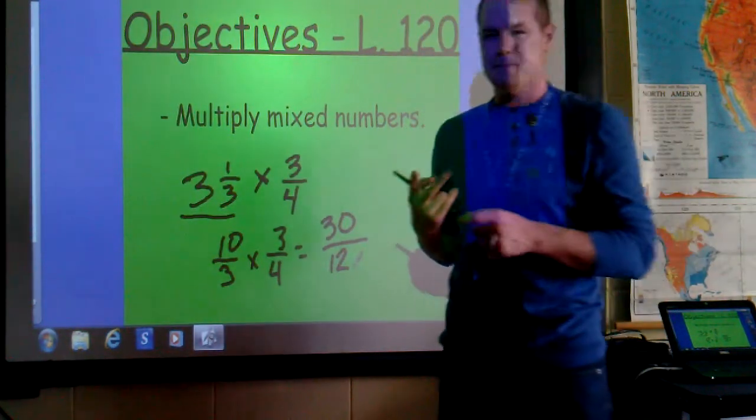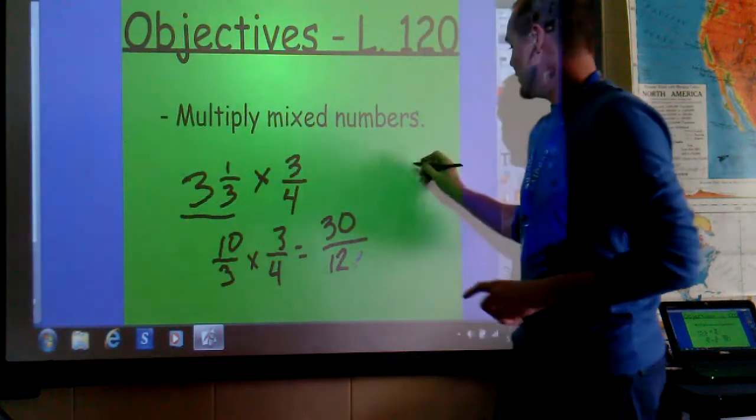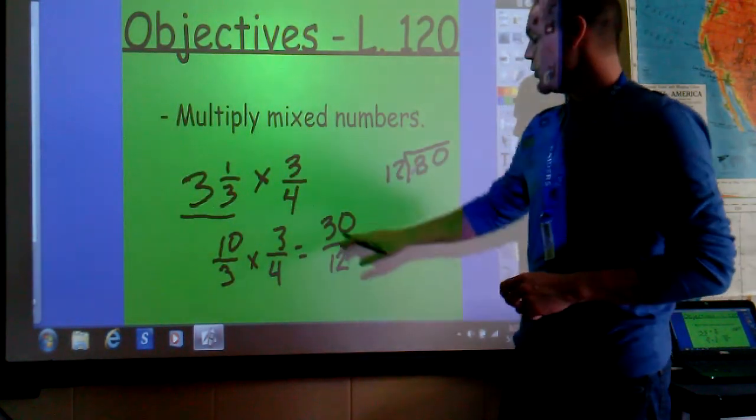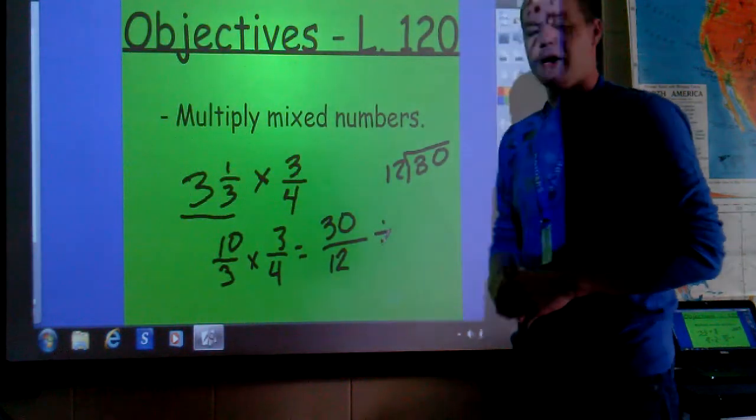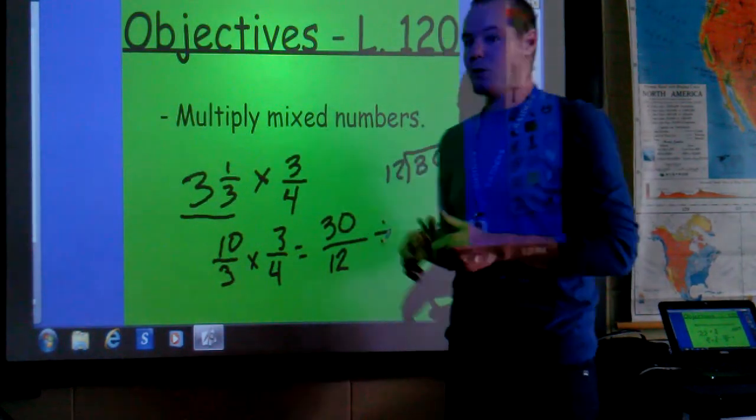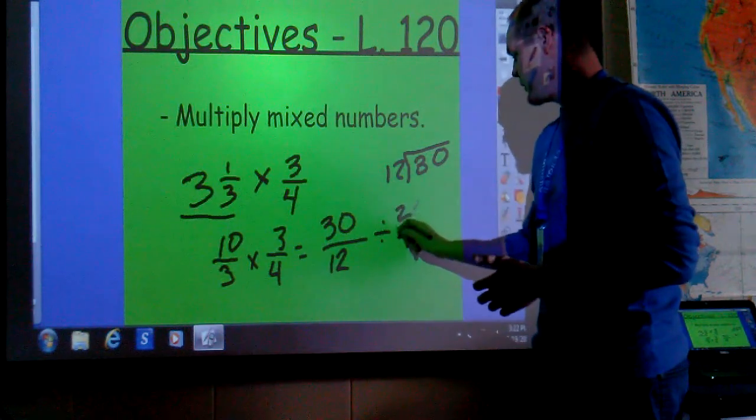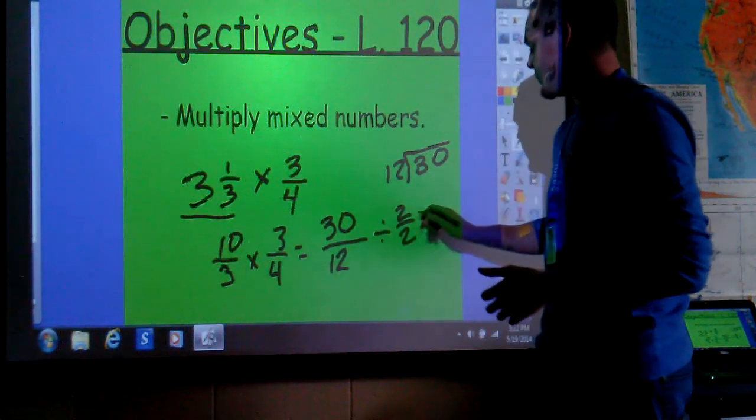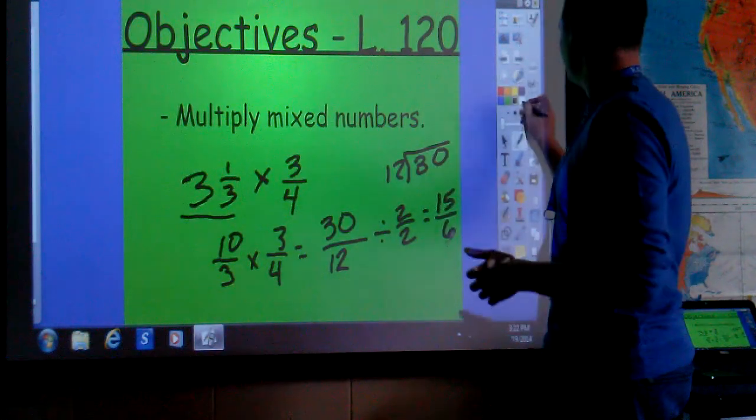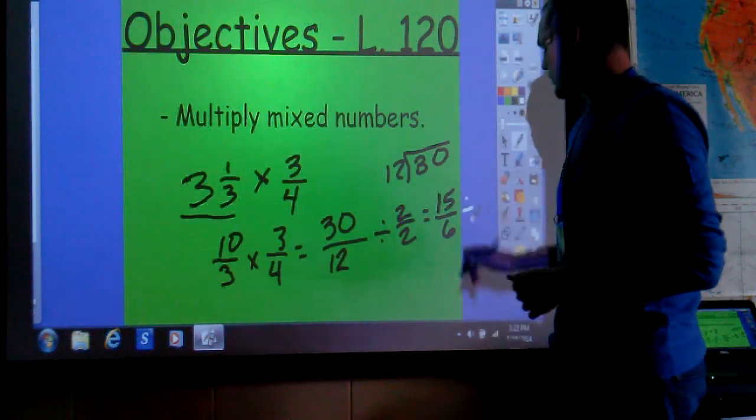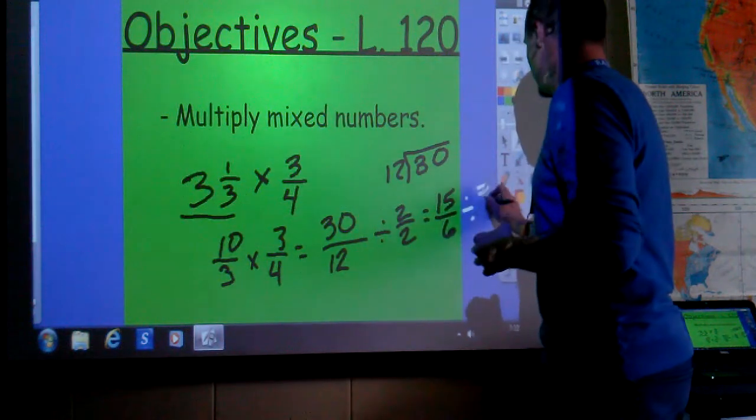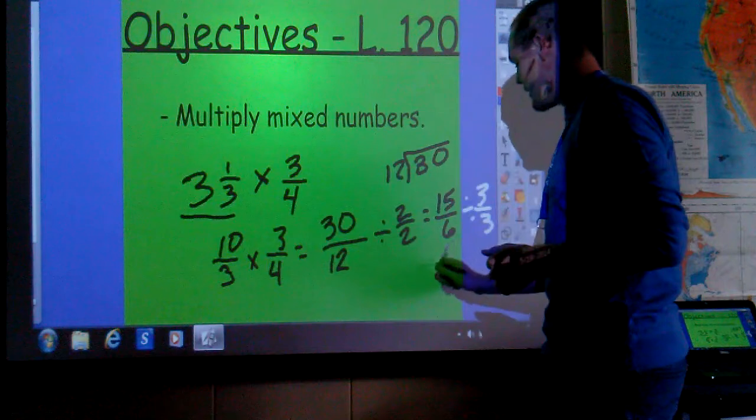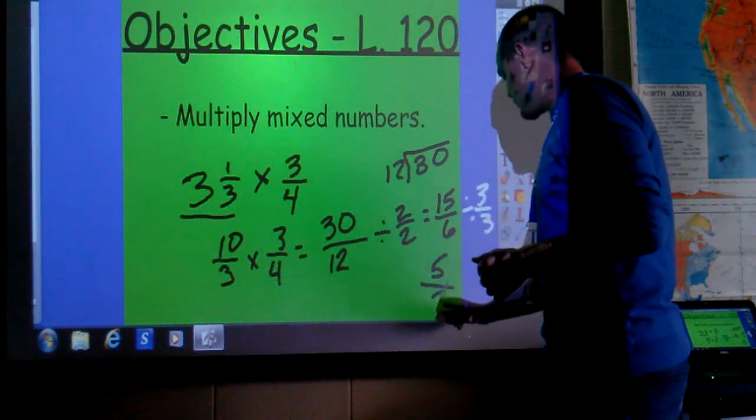At this point, you can go one of two different ways. You can immediately divide 30 by 12, or you can reduce by finding the greatest common factor of those two numbers. And either way is fine. I'm going to start just dividing 30 and 12, both terms, by 2. And I get 15, 6. I know that that isn't reduced yet, because both are divisible by 3. So, I'm going to divide each term by 3 and get 15 divided by 3 is 5. 6 divided by 3 is 2.